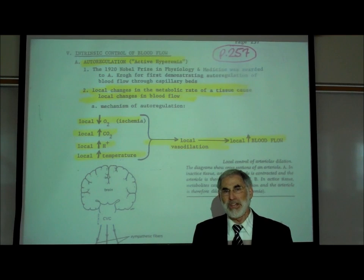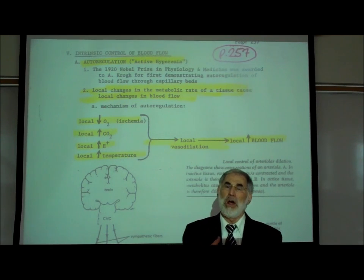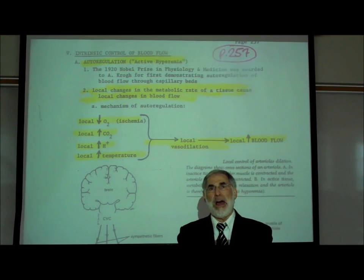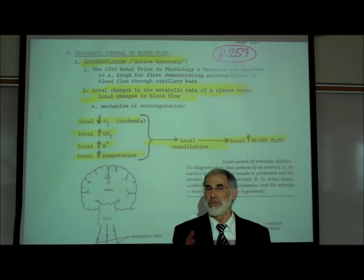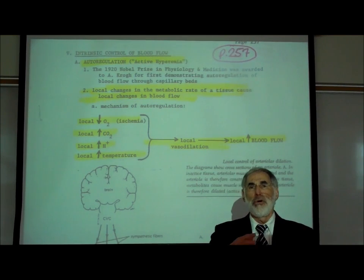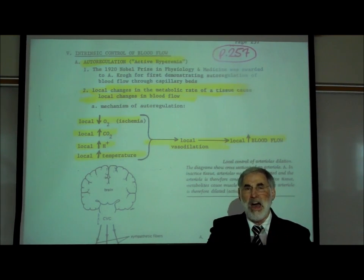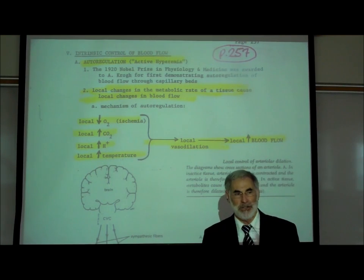We take advantage of this local auto-regulation phenomenon. Any time we wish to increase the blood flow to a tissue, we can apply a hot compress. Any time we wish to reduce the flow of blood to a tissue, such as after it's been injured, you apply a cold compress or ice. The result is a decrease in blood flow to that tissue.